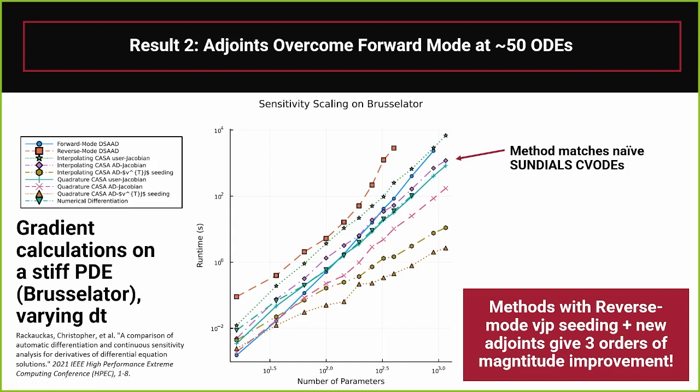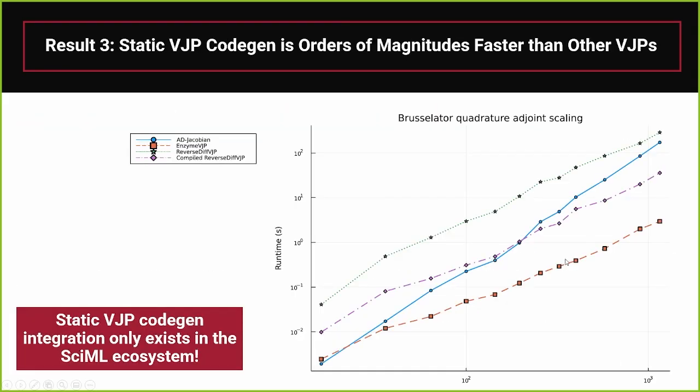But when I say that we're doing this vector Jacobian product seeding, does which reverse mode that you're using matter for this result? And it turns out that in order to get that good result, you need to be using static VJPs for that pullback operation. It turns out that using other forms of vector Jacobian products, especially ones that are building the compute graph on the fly, make it so that you do not get that full payback. And so using this fairly new form from Enzyme, which is a direct reverse mode AD that is mixing in the LLVM compiler optimizations, is really what's required to really get that full three-order magnitude improvement.